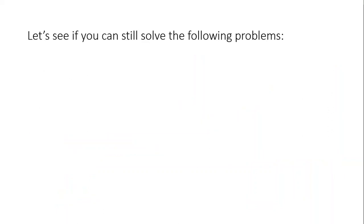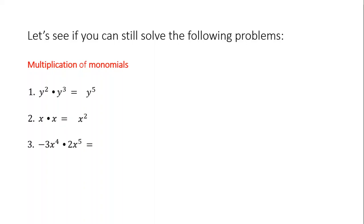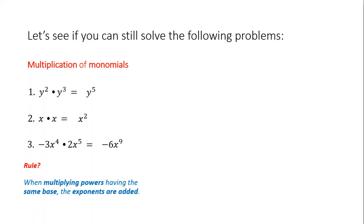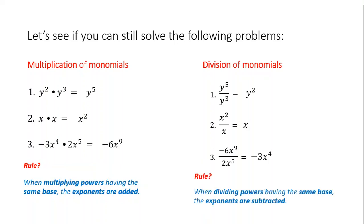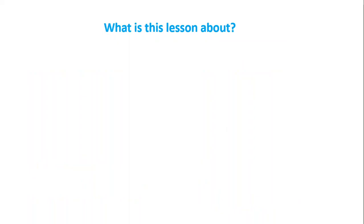Let's see if you can still solve the following. Multiplication of monomials: y² × y³ = y⁵; x × x = x²; −3x⁴ × 2x⁵ = −6x⁹. Rule: when multiplying powers having the same base, the exponents are added. Division of monomials: y⁵ ÷ y³ = y²; x² ÷ x = x; −6x⁹ ÷ 2x⁵ = −3x⁴. Rule: when dividing powers having the same base, the exponents are subtracted.